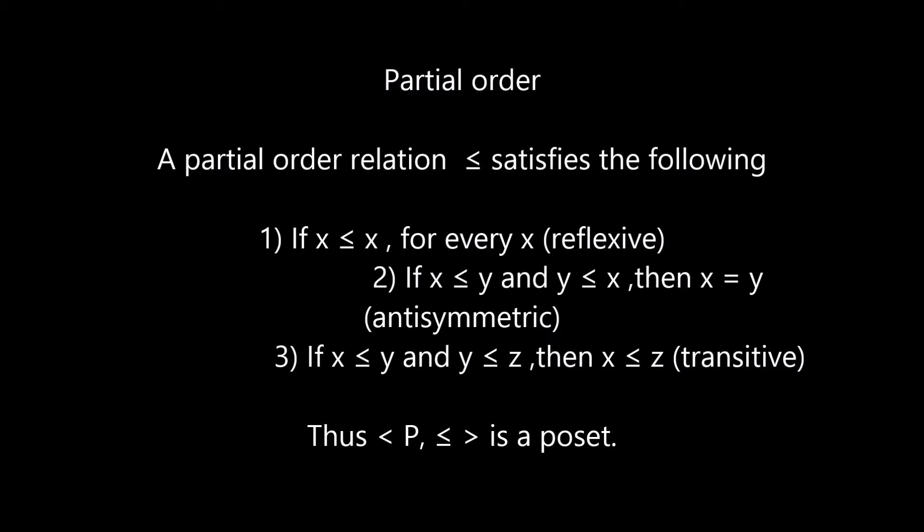We now look at the partially ordered set. A relation R on a set A is said to be a partial order relation if R is reflexive, antisymmetric, and transitive. Partial order is always denoted as ≤. The set P with a partial order ≤ is called a partially ordered set, denoted (P, ≤). If x ≤ x for every x, it is reflexive. If x ≤ y and y ≤ x, then x = y — this is antisymmetric.